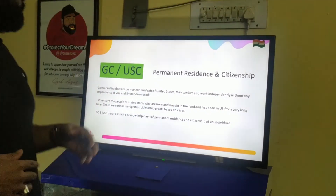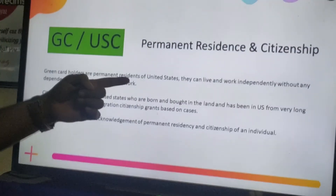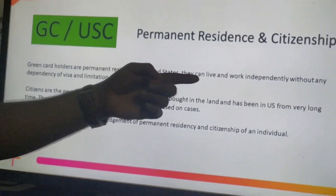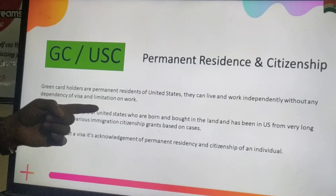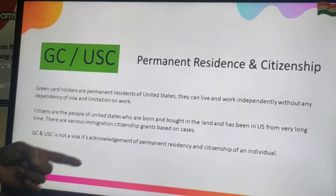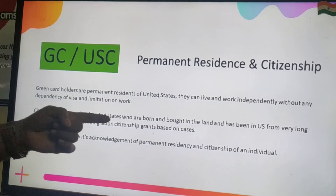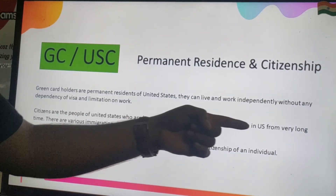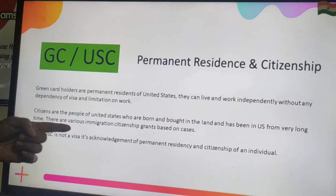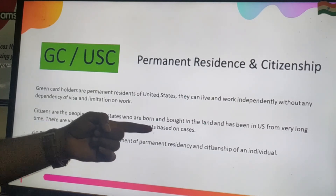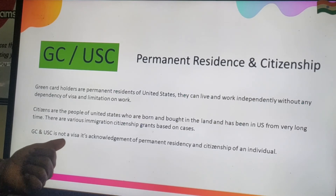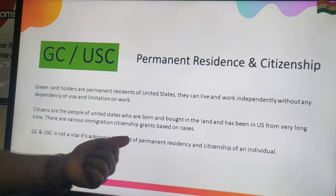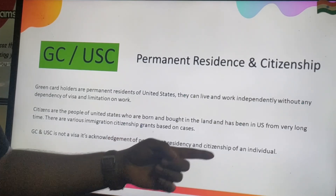Green card holders are permanent residents of the United States. They can live and work independently without visa dependency or work limitations. Citizens are people born and raised in the US or who have been there for a very long time. There are various immigration and citizenship grants based on individual cases. Green card and USC are not visas — they are acknowledgements of permanent residence and citizenship.